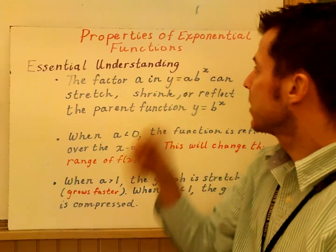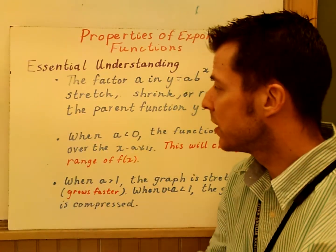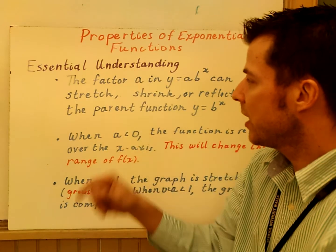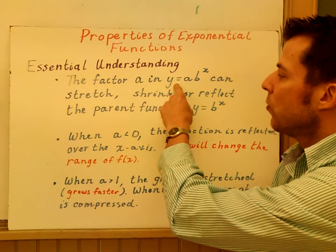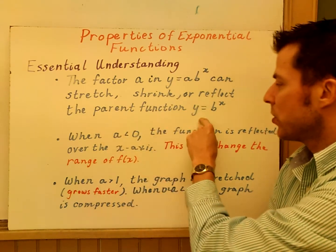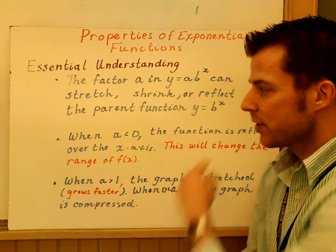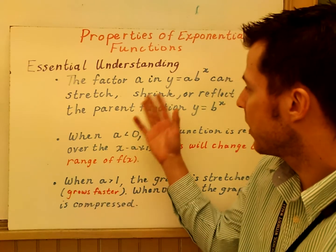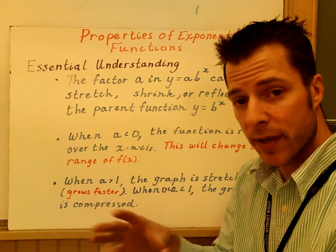Alright guys, welcome to Properties of Exponential Functions. Today, the essential understanding is that the factor A in Y equals AB to the X can stretch, shrink, or reflect the parent function Y equals B to the X. We're going to concentrate on that today, and then we're also going to talk about some translations.